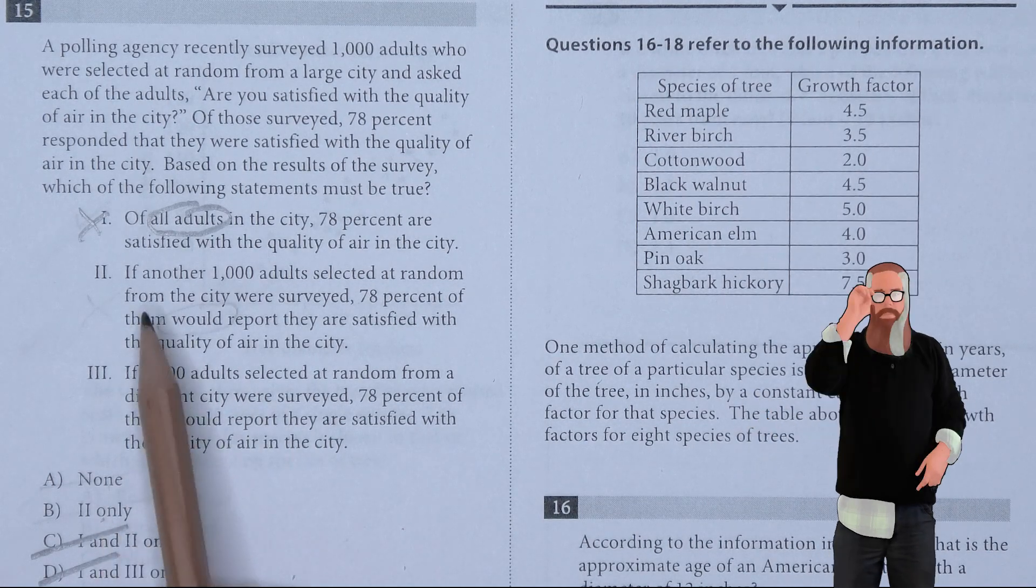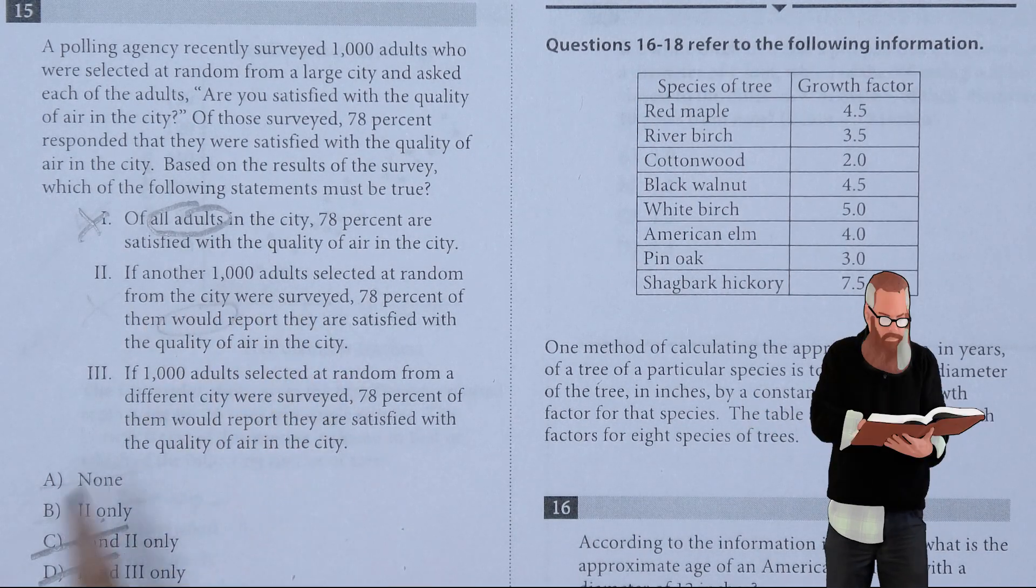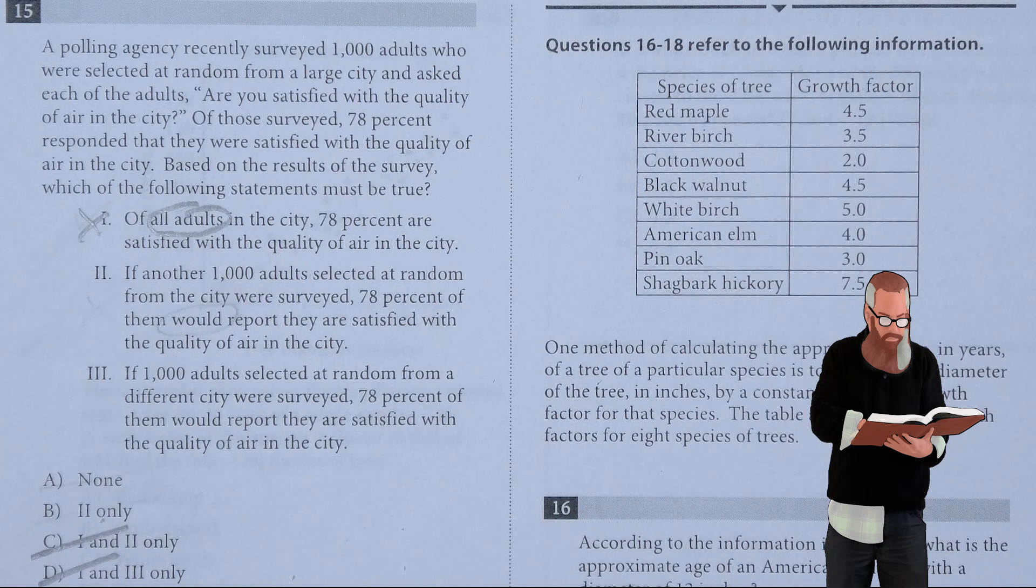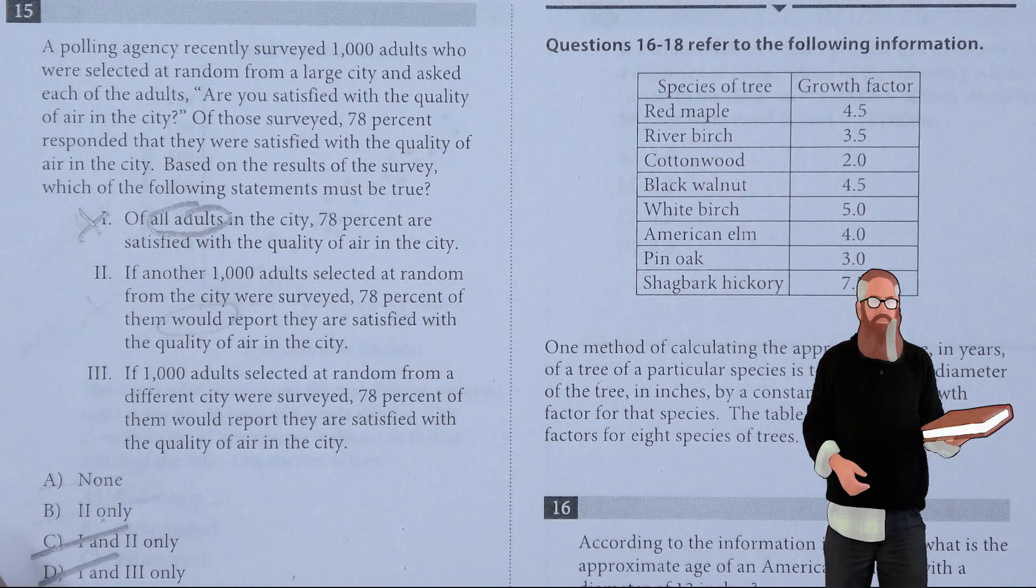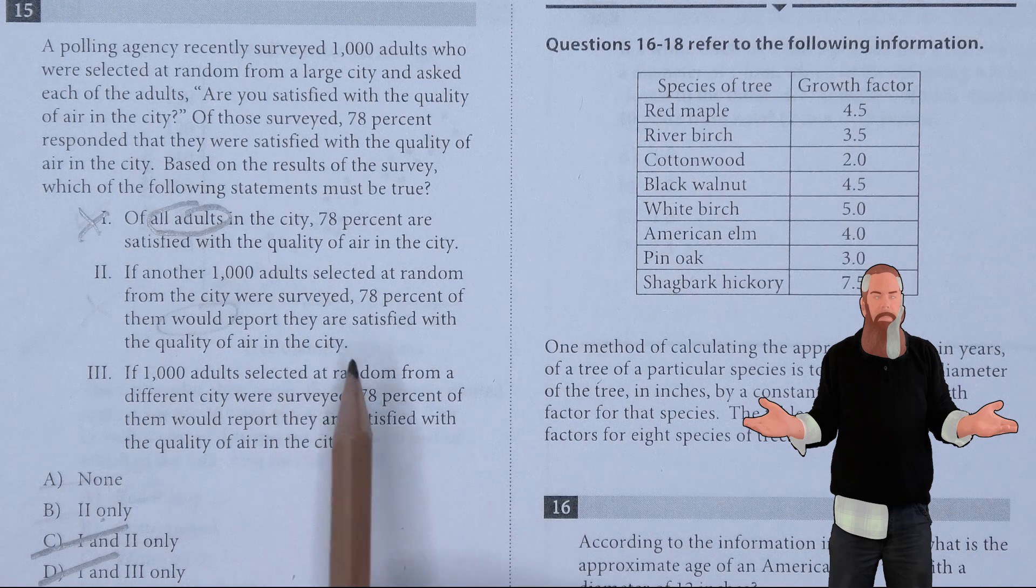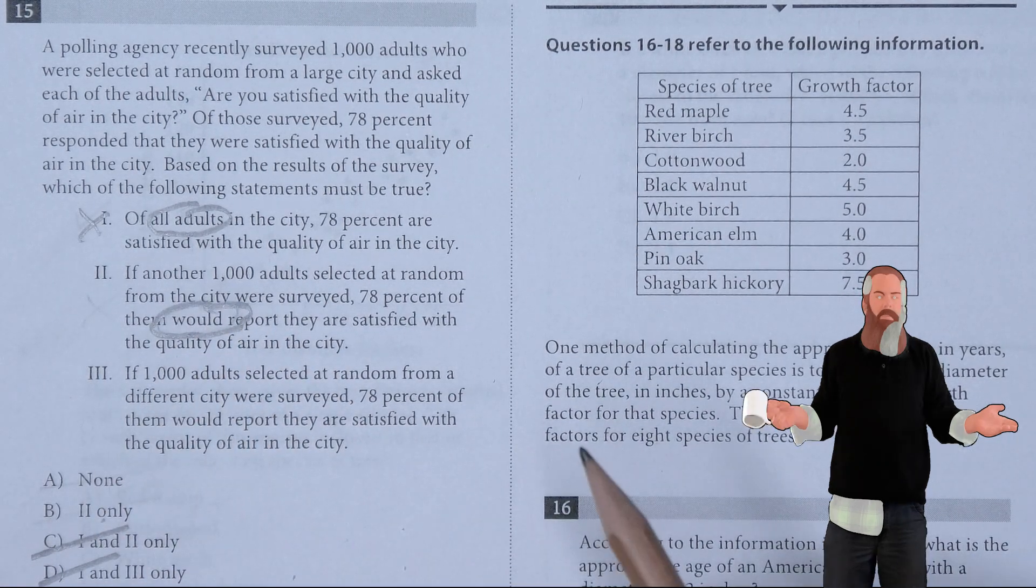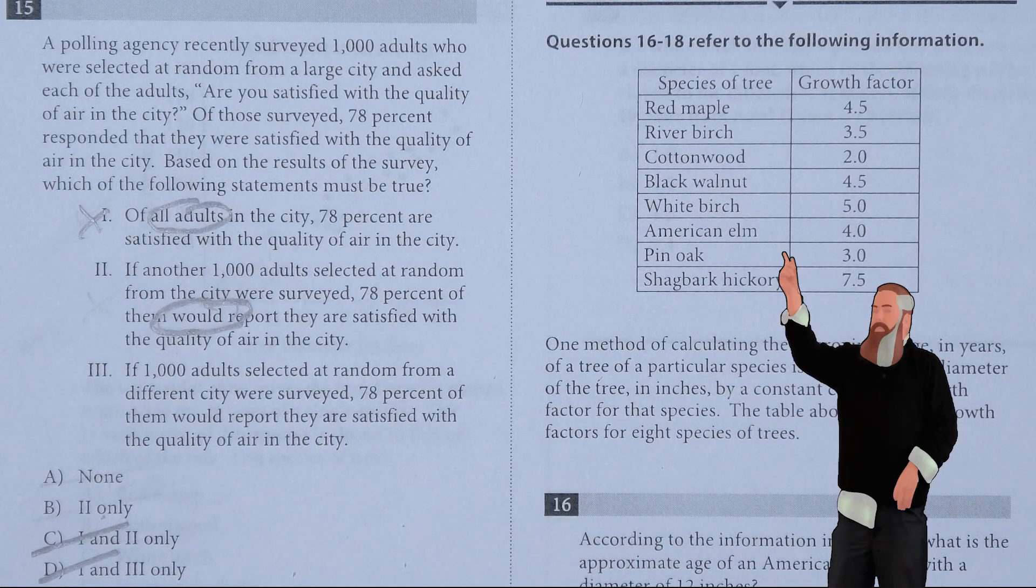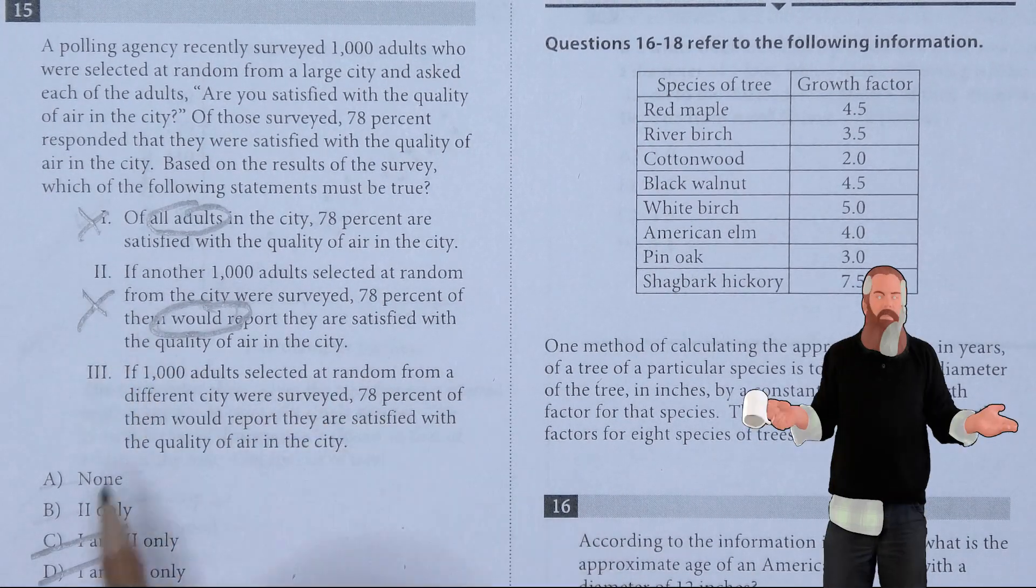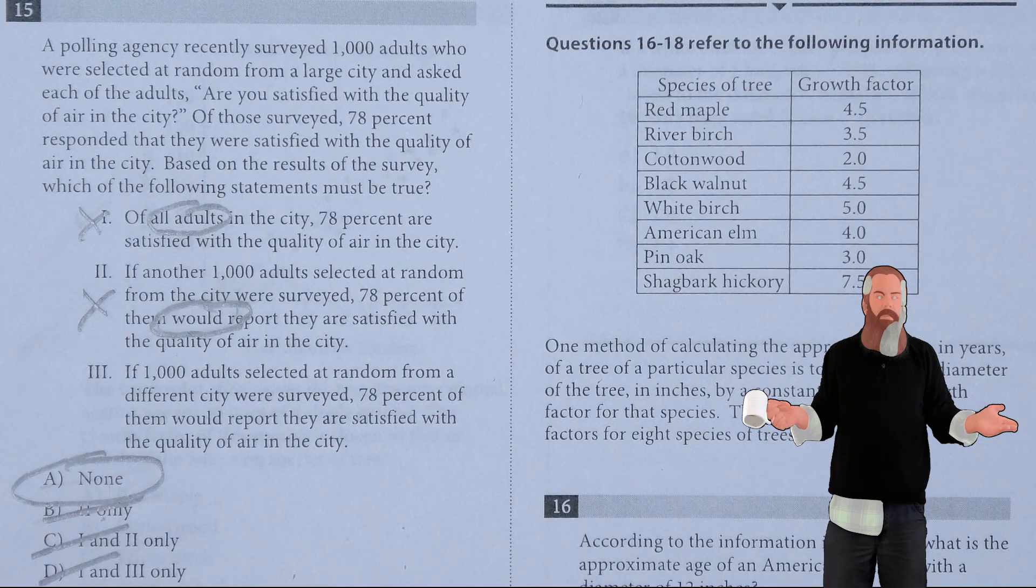I'm only interested in checking number two. If another 1,000 adults selected at random from the city were surveyed, 78% of them would report they're satisfied with the air quality. The fact it's 'would'—perhaps the number is much higher, perhaps much lower. So two is not true, meaning A is the answer.